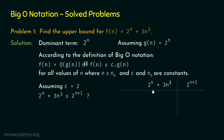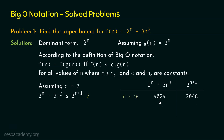We have F(n) equal to 2 to the power n plus 3n cubed, and C times G(n) equal to 2 to the power n plus 1. For n equal to 10, F(n) is 4024 and C times G(n) is 2048. At this point, C times G(n) is less than F(n). For n equal to 11, 2 to the power n plus 3n cubed equals 6041, and 2 to the power n plus 1 equals 4096. At this point also, C times G(n) is less than F(n).